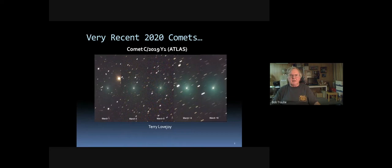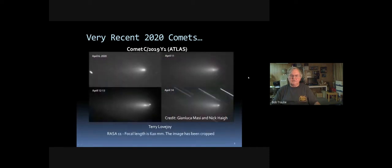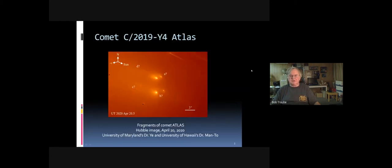Comet Atlas looked very promising back in March. Terry Lovejoy took a picture of it, and over the next two weeks it started getting brighter and forming a tail. But as you've probably heard, Comet Atlas broke up. Mossy and Haig captured the nucleus breaking up, and Hubble got good pictures showing it splitting into four pieces — though as that happens the brightness fades and it becomes less attractive as a photographic target.